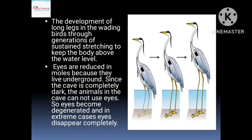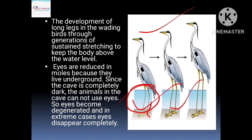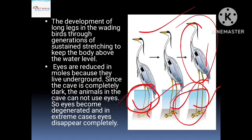Another example is wading birds developing long legs through generations of sustained body stretching to keep the body above the water level. They elongated their legs to wade in water, and this acquired character became hereditary. Additionally, the eyes are reduced in moles because they live underground in dark caves. Since the cave is completely dark, moles cannot use their eyes, so the eyes became degenerated and in extreme cases disappeared completely.